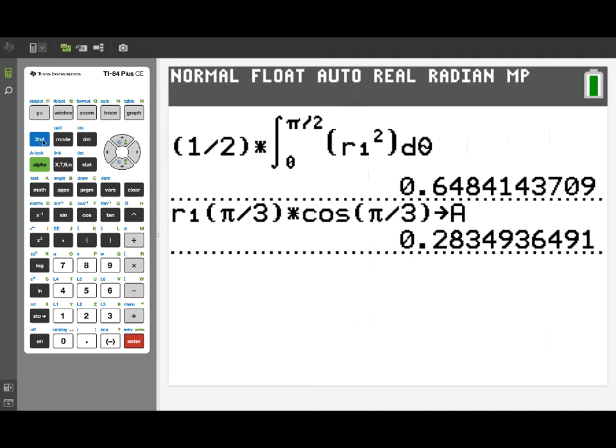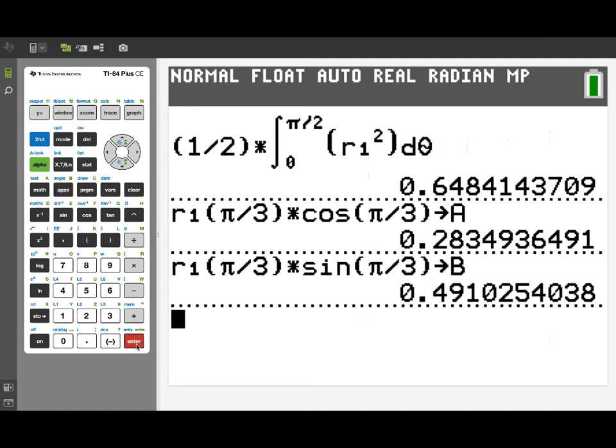Now we want to do a similar thing for the Y coordinate at that point of tangency. To save some typing, I'm just going to echo using the entry. And we'll edit that. We'll change the cosine of pi over 3 here to the sine of pi over 3. That's going to give us the Y coordinate. And instead of storing that in A, we'll store that in B. That's the Y coordinate of our point of tangency. We're ready to go. And there's our Y coordinate. It's approximately 0.491.